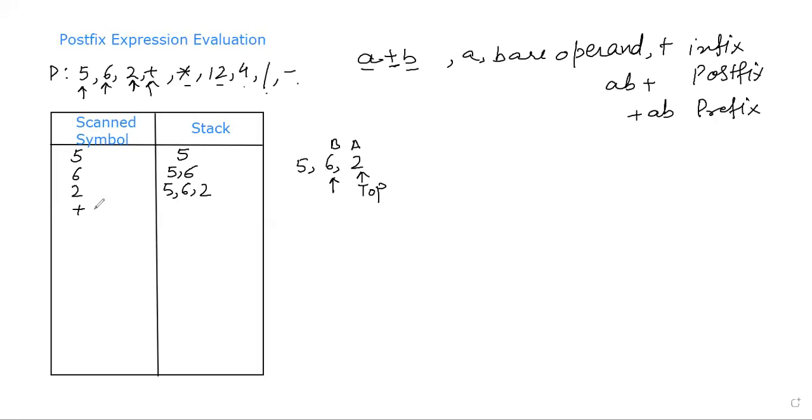So whenever you come across any operator, we need to perform b operator a. It's b operator a. This is not a multiplication sign. This can be any operator. If it is plus, we need to perform plus. If it is division, we need to apply division, minus, minus, and multiply will be treated as multiply.